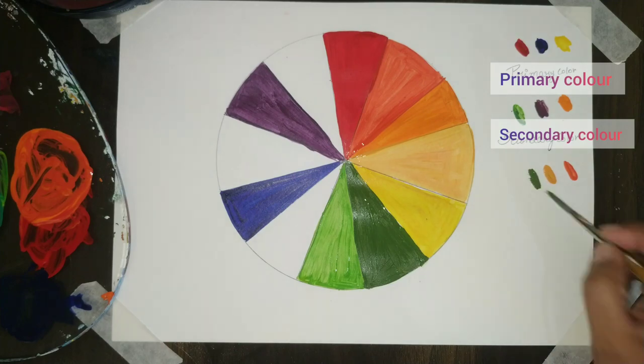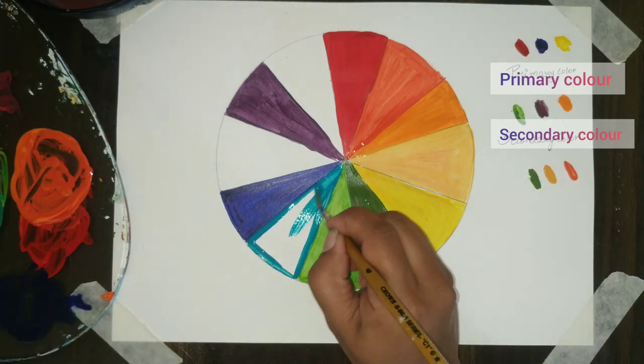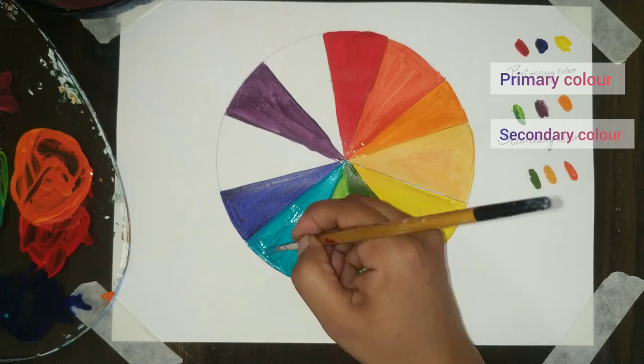Green and blue can make a sea blue color or a turquoise color. So here we are making the turquoise color and here we are done.